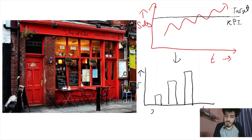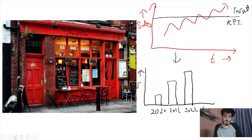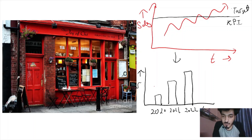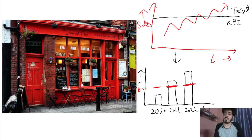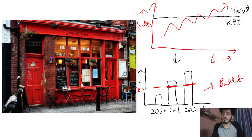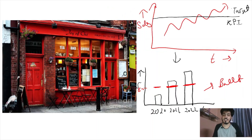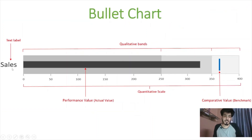Suppose we show sales for 2020, 2021, and 2022 in a bar chart. Just as we represent the KPI as a line on a line chart, we can represent it on a bar chart — for example, a target of 50 for each year shown as a reference line. This form of representation is known as a bullet chart: showing the KPI alongside the bar graph.